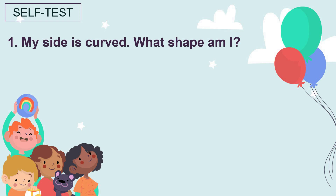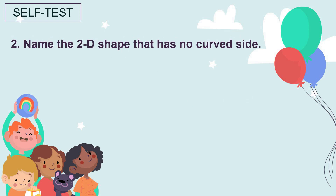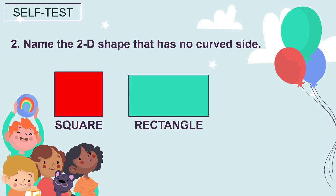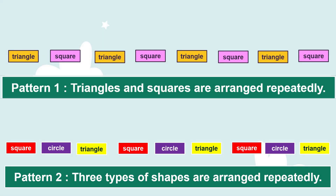Let's do a self test. My side is curved — what shape am I? Yes, I am a circle. Let's do another self test: name the 2D shape that has no curved side. Yes — square, rectangle, and triangle.